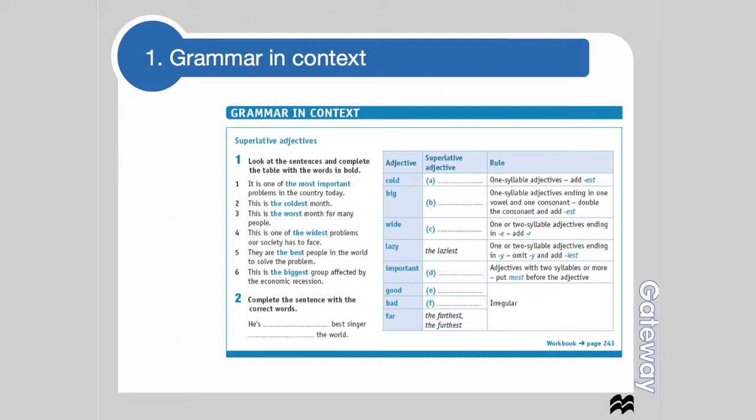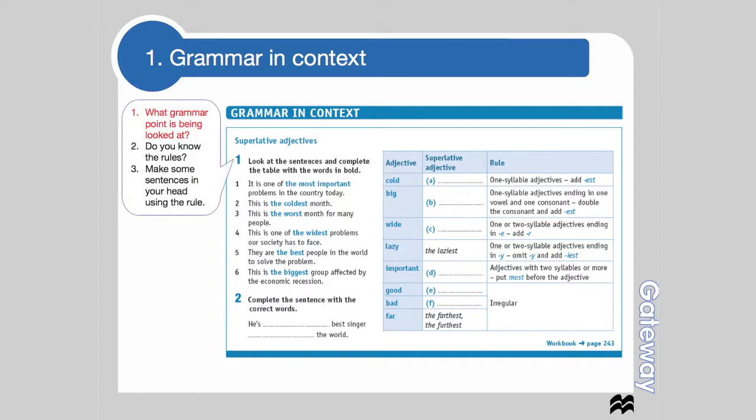Let's look at grammar in context. It's important to look at grammar in context because it gives you the chance to really look at the language, see how it's used, and then perhaps translate or see if there are any similarities or things which you need to note for future reference. Here we have a slide looking at superlative adjectives. It's key and fundamental that you look at what grammar point is being covered, think about it, and make sure you fully understand the equivalent in Italian.